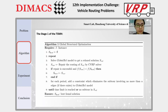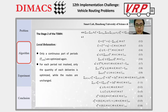Next, we introduce the local relaxation used in the second stage. We made the following modifications for the local relaxation. First, only a continuous part of the period called T-con is optimized again. Second, for each period not included in T-con, only the quantity of each delivery is optimized, while the routes are all preserved.